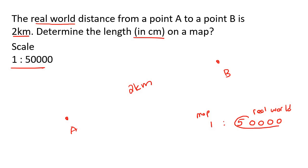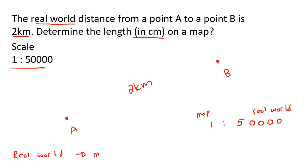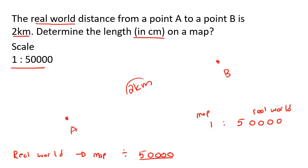To go from the real world back to the map, what do you have to do? You have to divide by 50,000 — because if you divide the real world value by 50,000, it will become a one. So to go from the real world to the map, you divide by 50,000. But they want the answer in centimeters, so we're going to take this real world number and convert it into centimeters first.